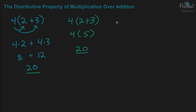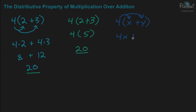I want to distribute the 4, and let's throw in some variables here — we'll do x plus y. So we're going to use the distributive property of multiplication over addition to distribute the 4 into the x and the y. So we have to multiply the 4 times the x, and then the 4 times the y, and we'll still add those two terms together. So 4 times x will give you 4x, then you have the addition, and 4 times y will give you 4y.